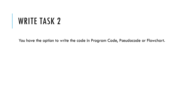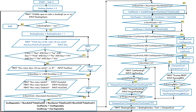Most likely, the pre-release material will ask you to write task 2, as pre-release materials usually ask for the longer task. In my previous video, I put the entire program code in less than 70 lines. You could write task 2, which includes task 3 inside it. Or, as in this video, the entire task 2 and task 3 are shown together in one flowchart on one sheet of paper.